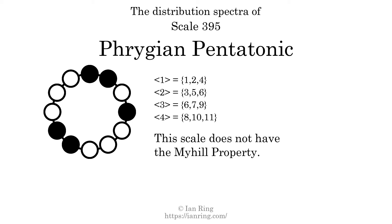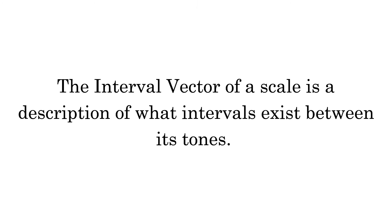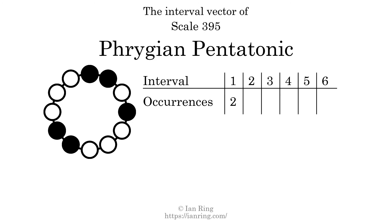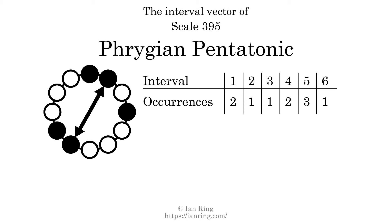The interval vector of a scale is a description of what intervals exist between its tones. There are two intervals with the size of one semitone. There is one interval with the size of two semitones. There is one interval with the size of three semitones. There are two intervals with the size of four semitones. There are three intervals with the size of five semitones. There is one interval with the size of six semitones. Each interval does not appear in this scale a unique number of times, so this is not a deep scale.